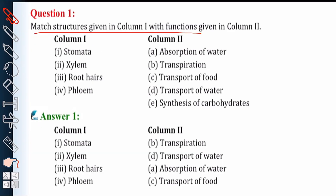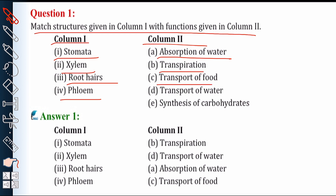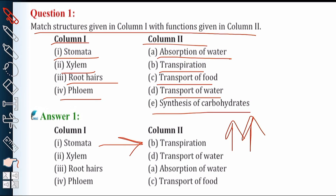Match structures given in Column 1 with functions given in Column 2. Column 1: stomata, xylem, root hairs, phloem. Column 2: absorption of water, transpiration, transport of food, transport of water, synthesis of carbohydrates. Simply match them. First is stomata — stomata is related to transpiration.